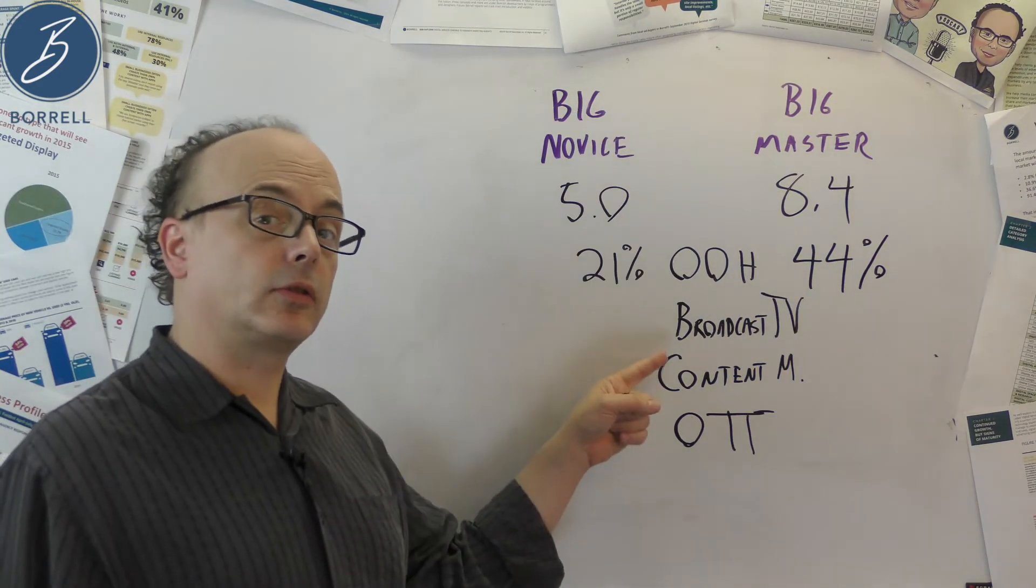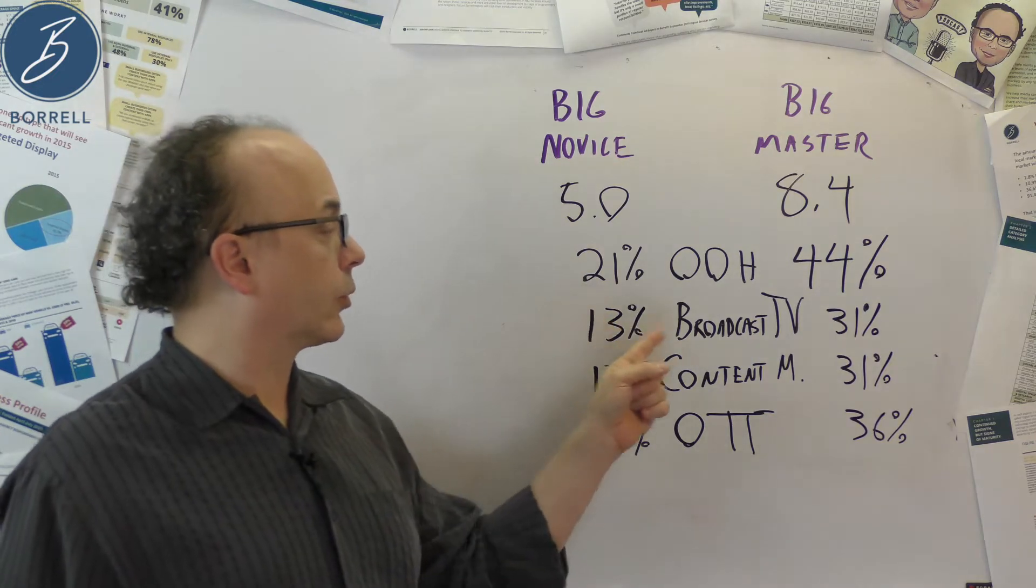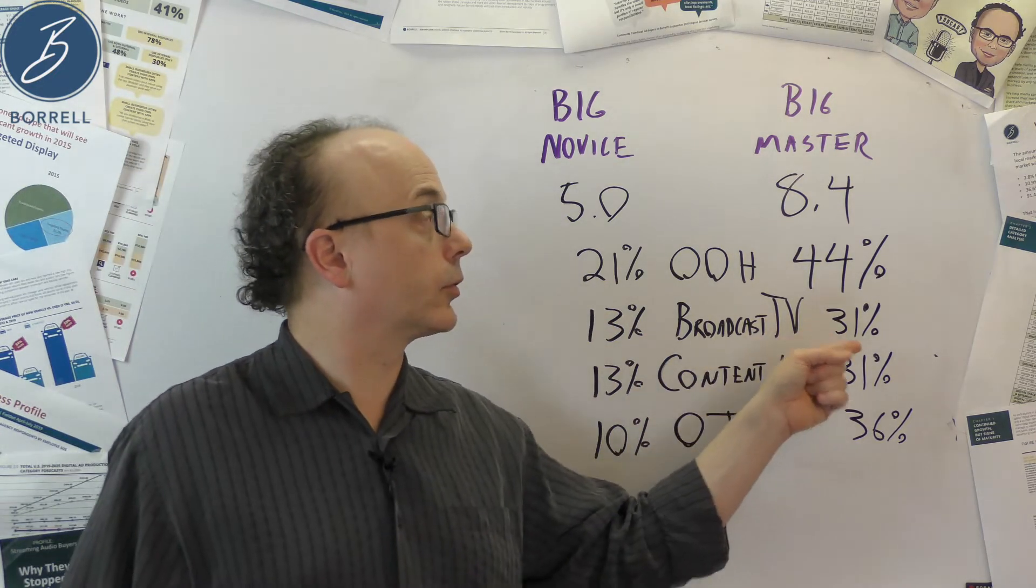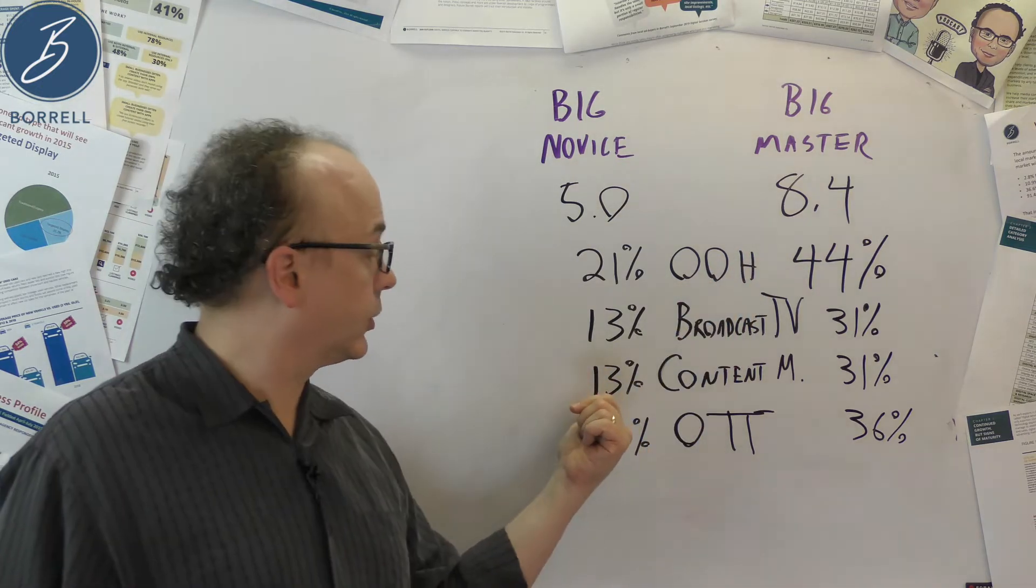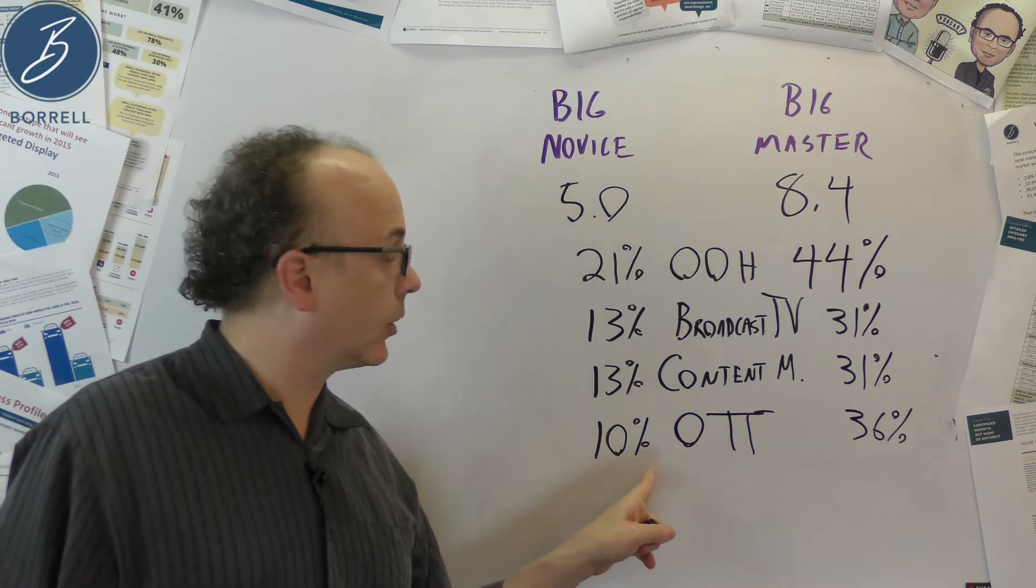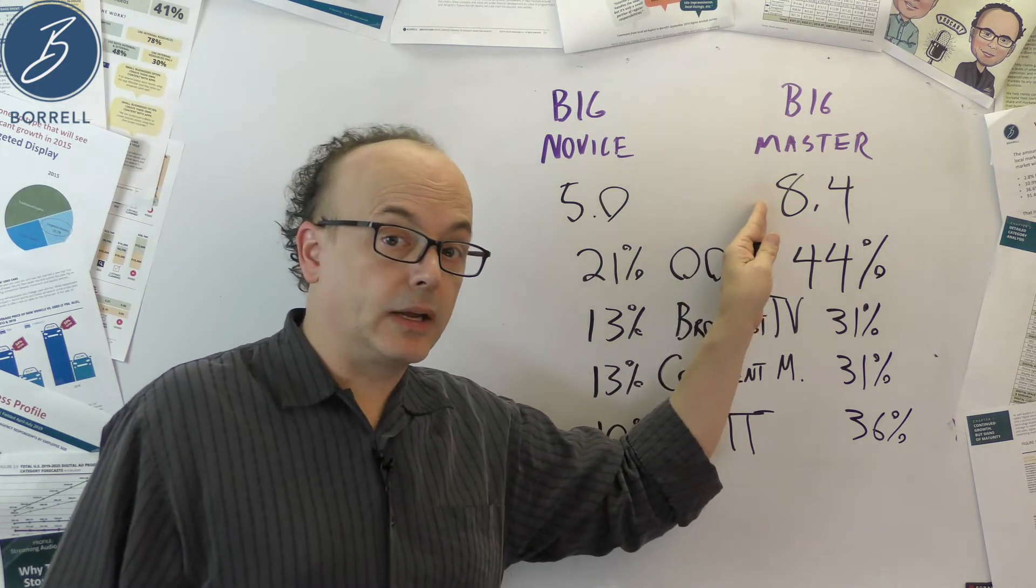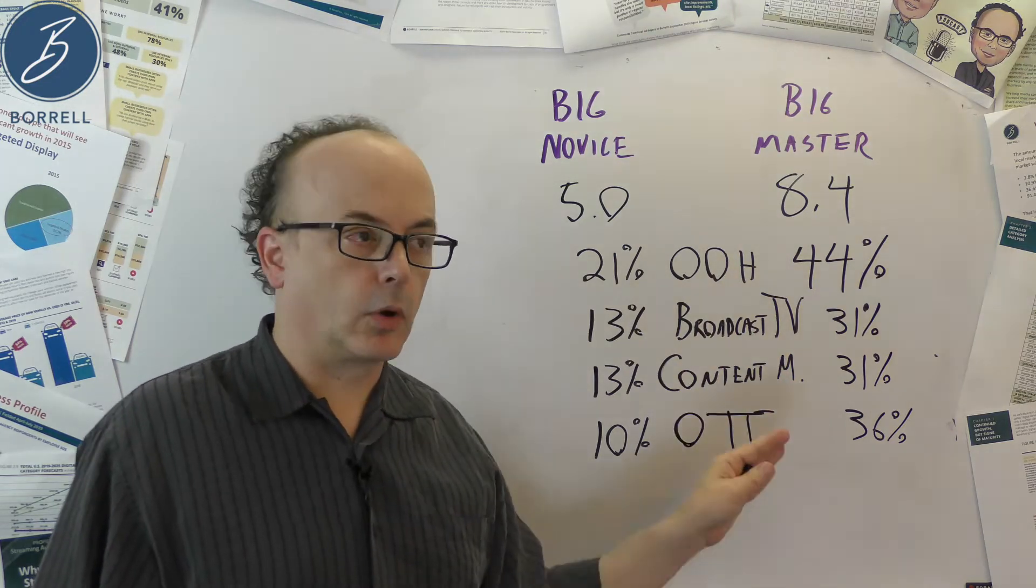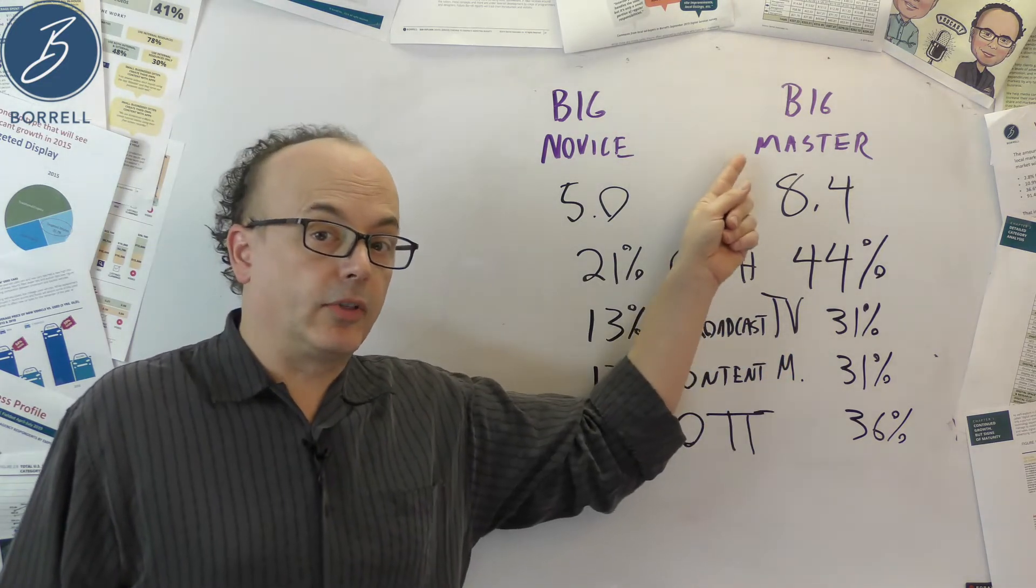There were some pretty stark differences when it came to broadcast TV, content marketing, and OTT. 13% of big novices were buying some broadcast TV, while 31% of big masters were. Same with content marketing. 13%, 31%. And look at this. OTT, 10% of big novices, 36% of big masters. So big masters buying more media, and more of them buying stuff. They're buying more media and more stuff. That makes sense, right? Let's go a little deeper into these guys.